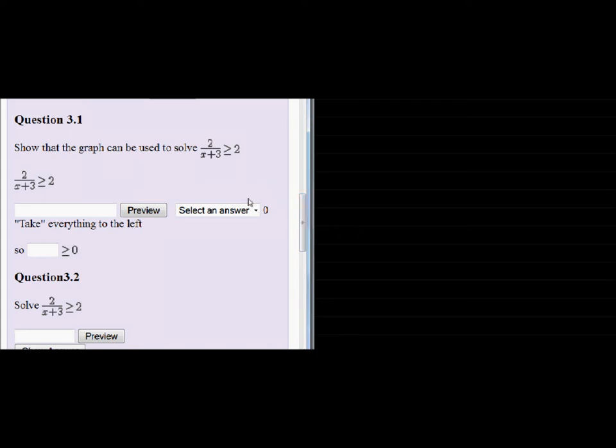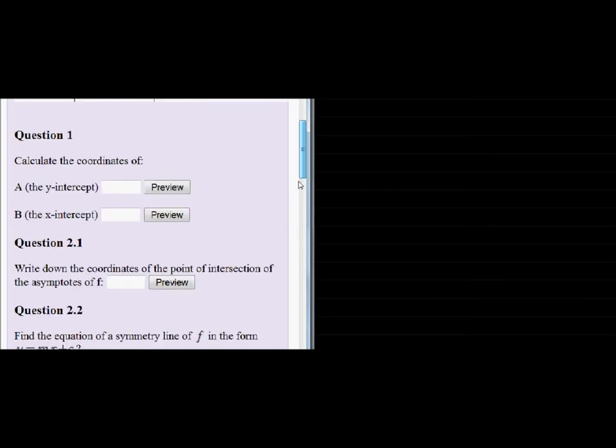Question 3.1 asks us to show that the graph can be used to solve 2/(x+3) ≥ 2. They ask us to somehow use the graph of f to solve this inequality. What I want you to notice is 2/(x+3) is part of what we have.